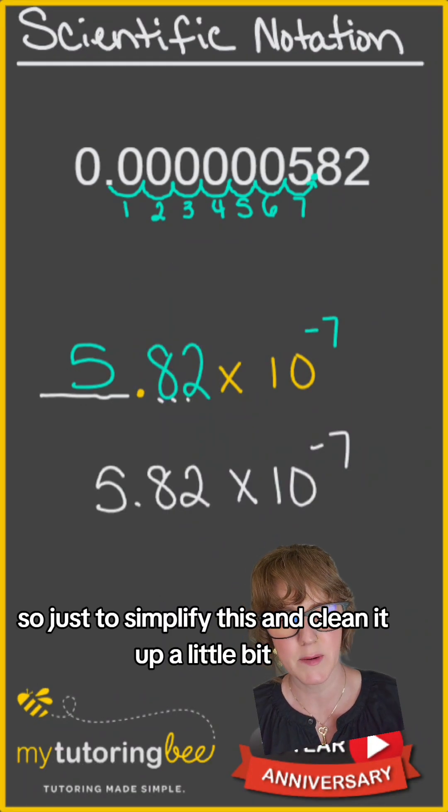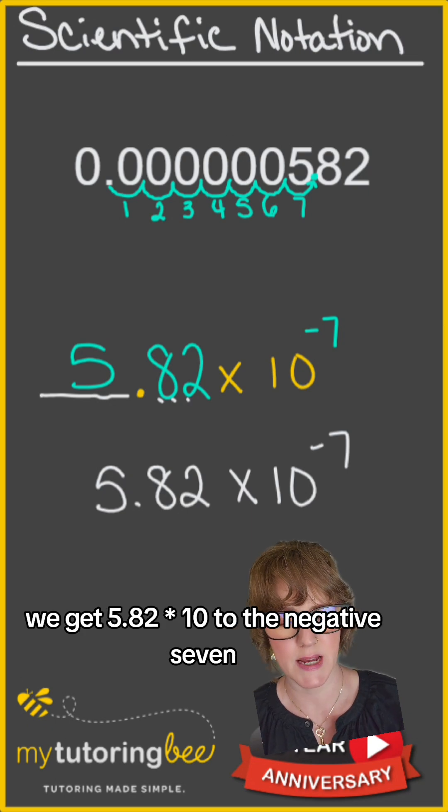So just to simplify this and clean it up a little bit, we get 5.82 times 10 to the negative seven.